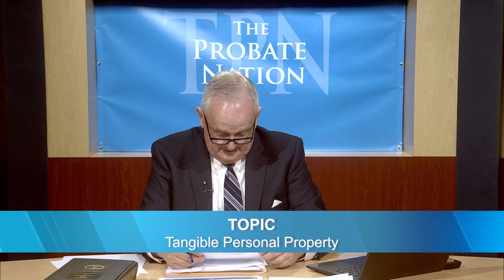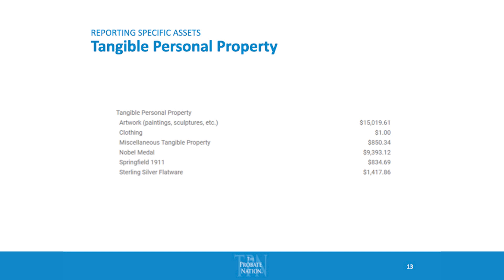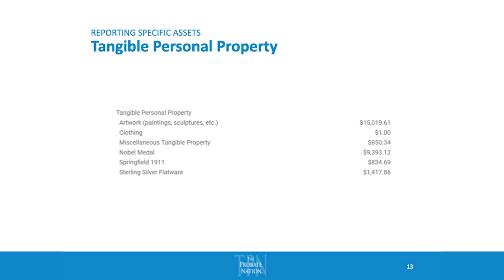Tangible personal property tends to be a big black hole, but assuming people have normal household items, we describe them generically on the inventory form. With tangible property, determine if any one item is worth more than $500. Most household items will be worth less, and for all of that you can lump it together as 'total tangible property worth less than $500 each' and put an estimated value. For each item worth more than $500 — like a diamond ring worth $2,000 — list that separately from the general grouping.